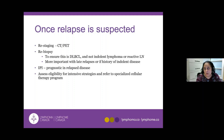If relapse is suspected, the first step is a CT scan or sometimes a PET scan. If there was a remote time between original diagnosis and relapse, I would want another biopsy — sometimes patients have a different lymphoma, like follicular lymphoma, which changes treatment options. I still use the IPI to prognosticate at relapse, and then most importantly, I consider referring the patient to a specialized cellular therapy program, since these are not available at every center. Patients from towns or cities outside major academic centers will have to travel to access this type of therapy.